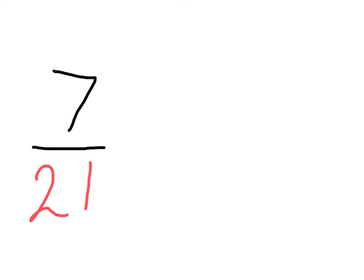So now let's see how this works. I know that the largest common factor of both 7 and 21 is 7. So what I have to do next is divide the numerator and the denominator by this 7.